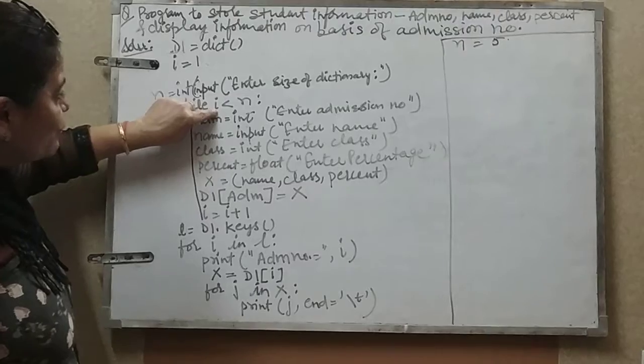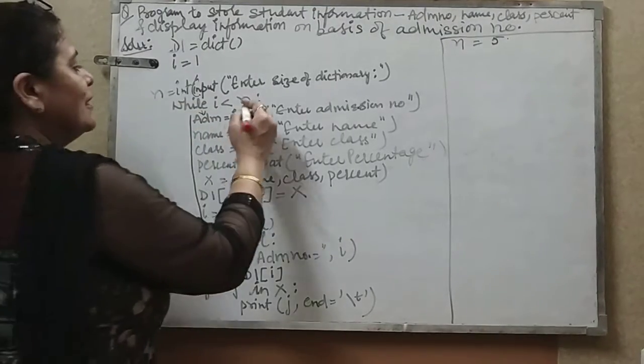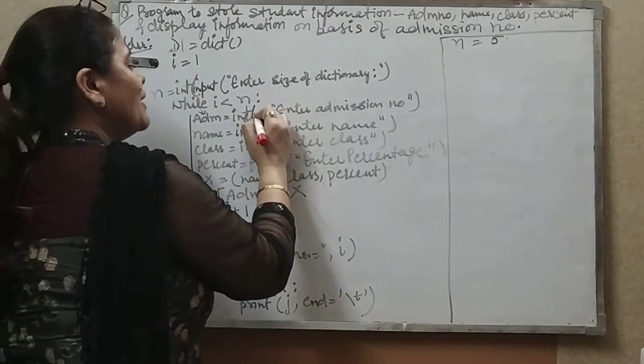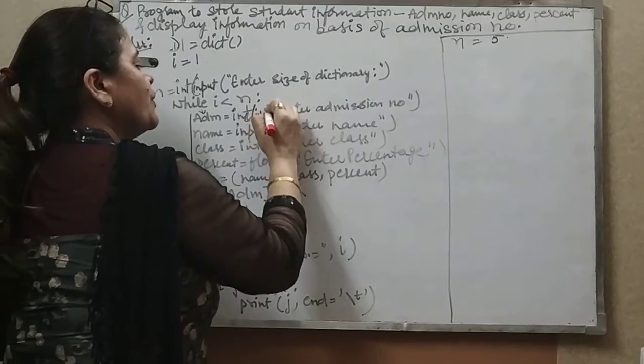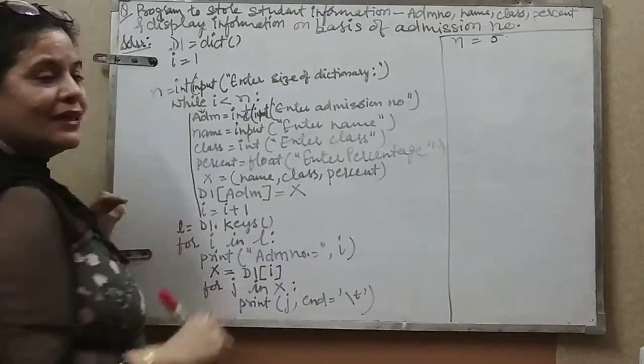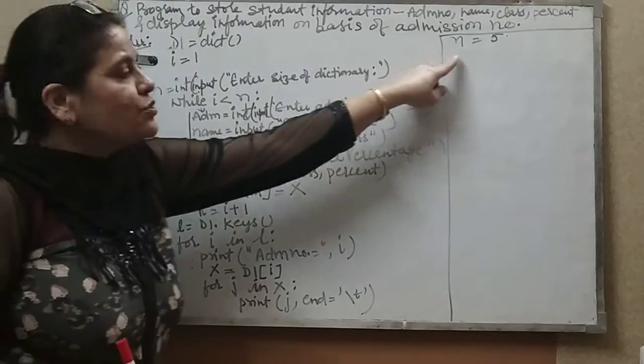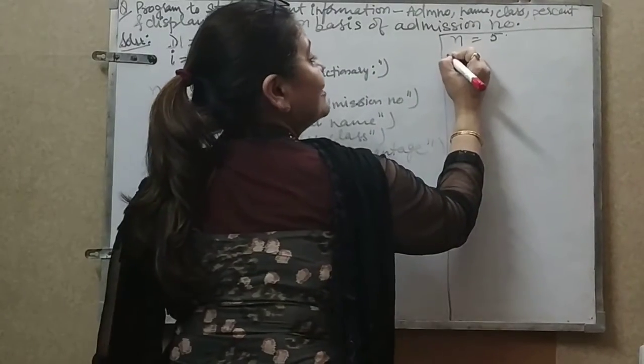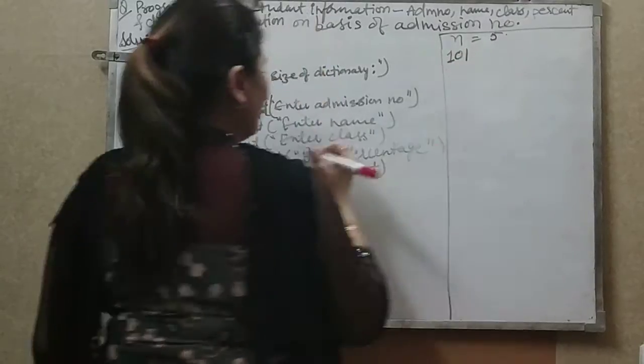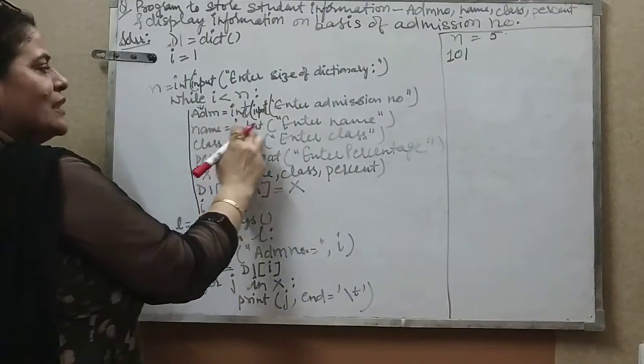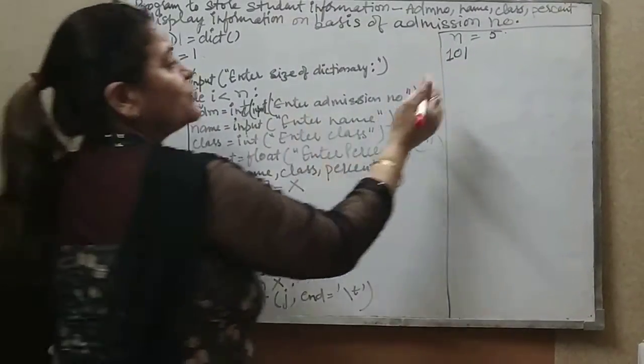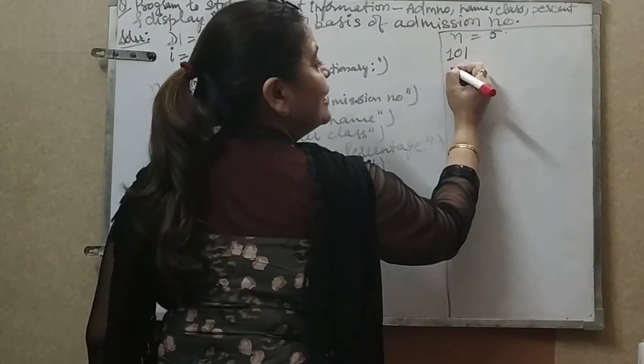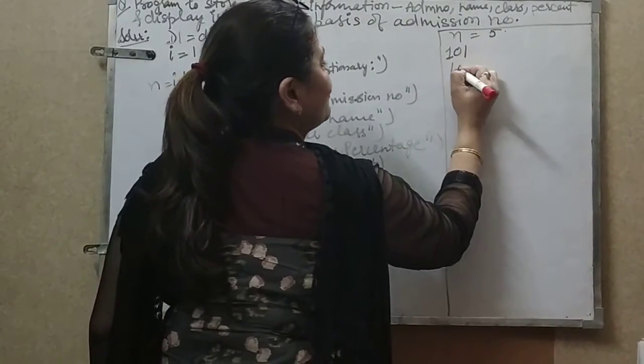Now if i is 1, it will ask for the admission number to be entered. That is int within brackets input, enter admission number. So it will ask enter the admission number. Suppose I entered the admission number as 101, then name equals input enter name. It will ask for the name, suppose the name I entered is Love.